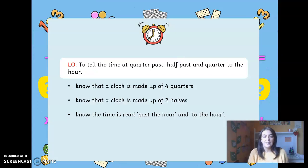We need to know that a clock is made up of four quarters and that the clock has two halves. If you have your clock there, have a look and see if you can identify where the four quarters are and where the two halves are.